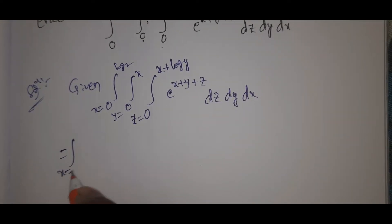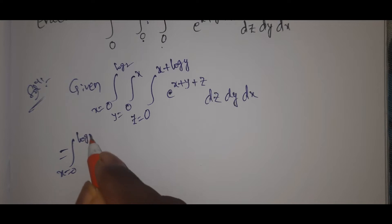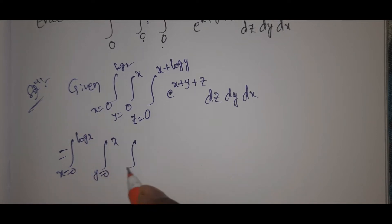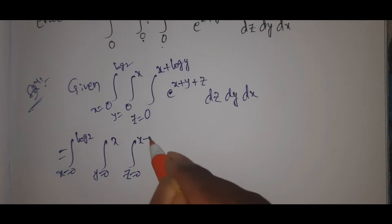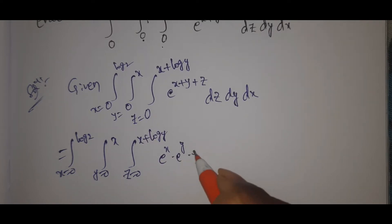That equals the integral with x from 0 to log 2, y from 0 to x, and z from 0 to x plus log y.